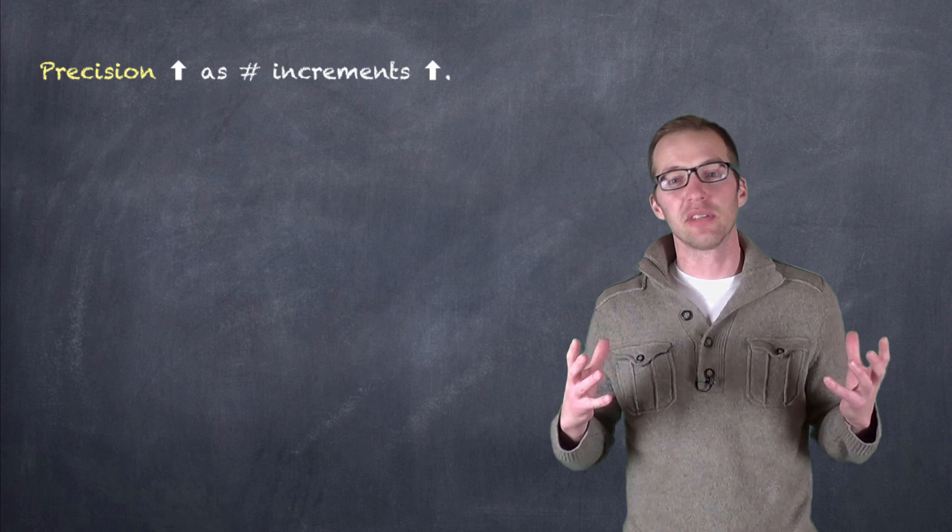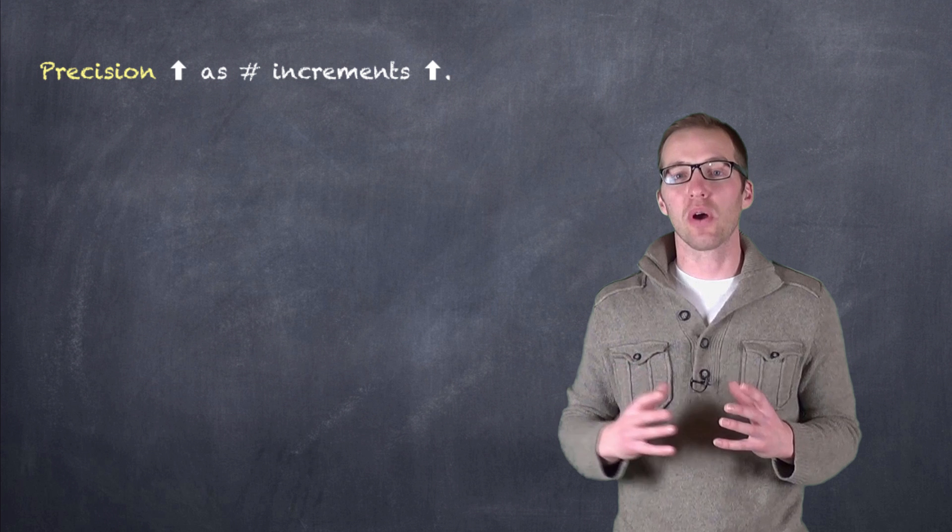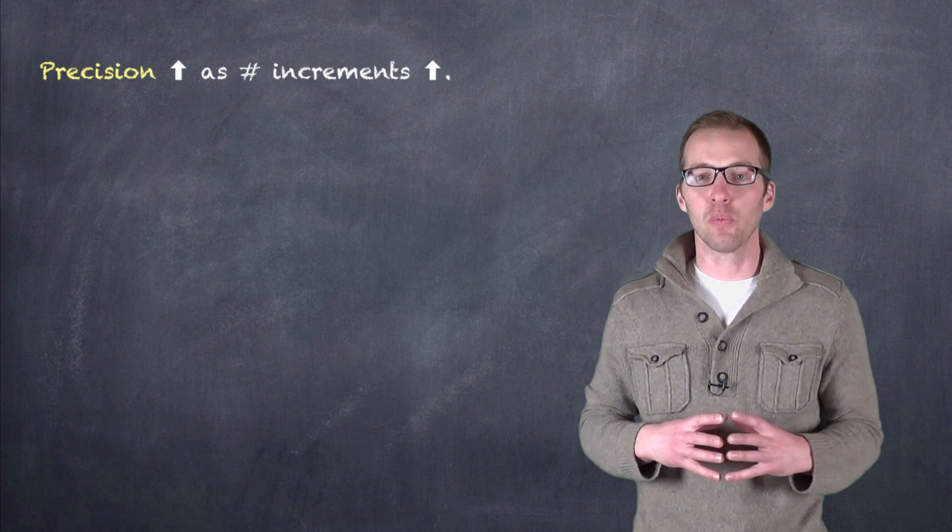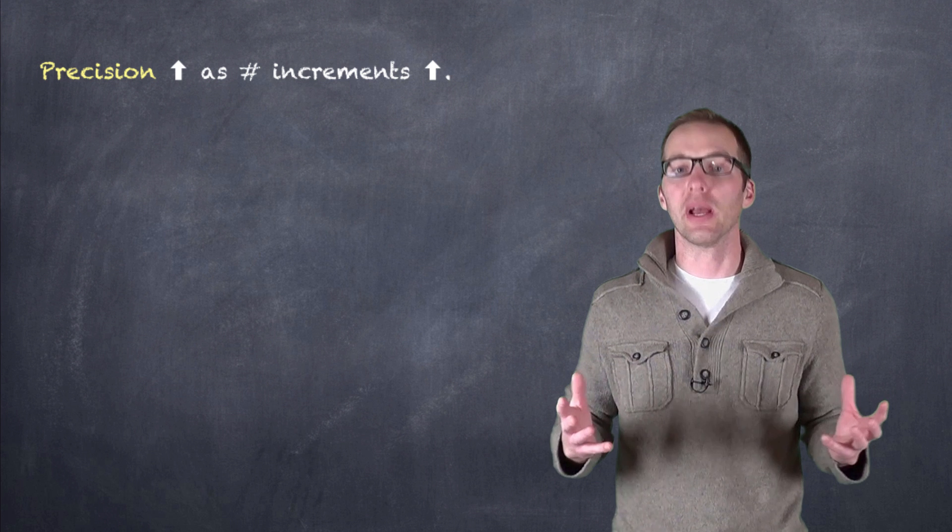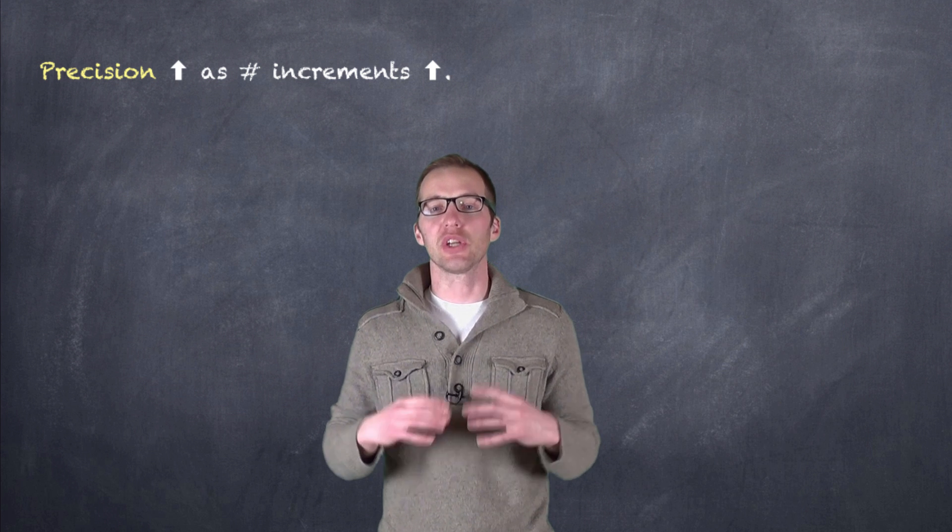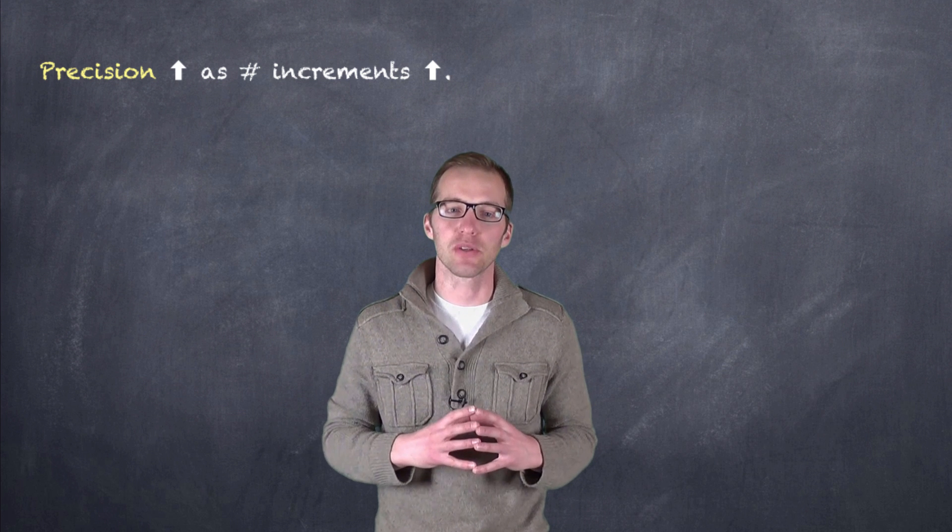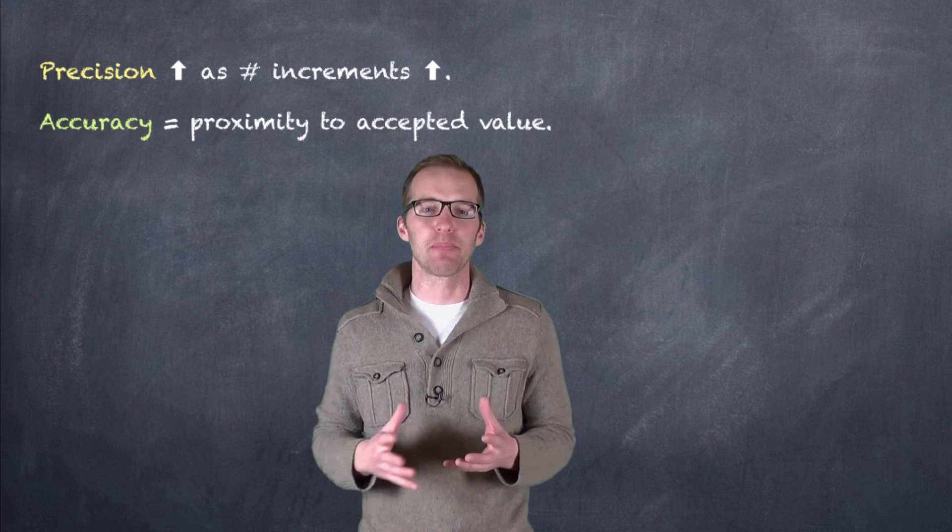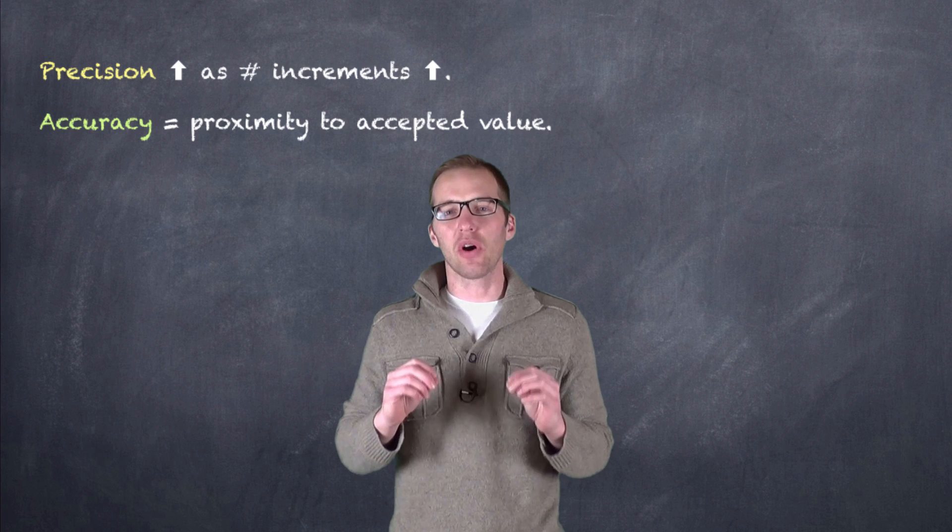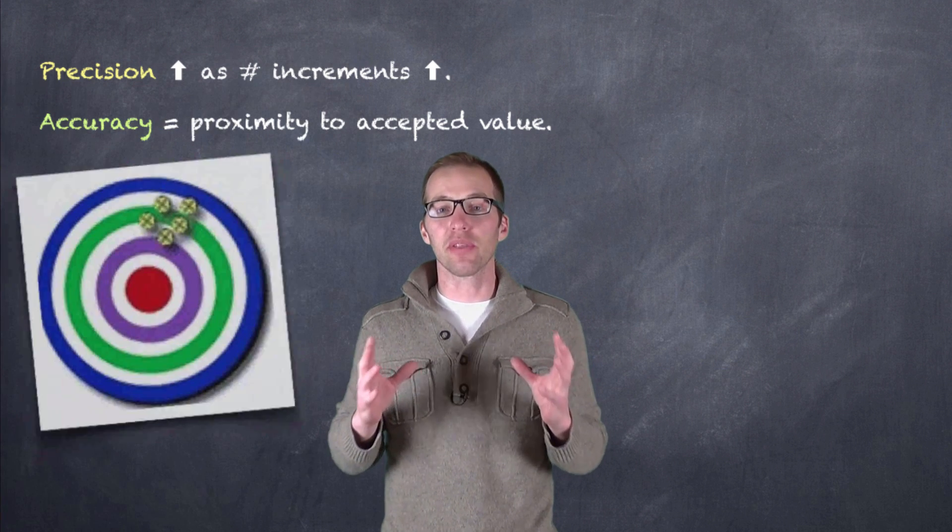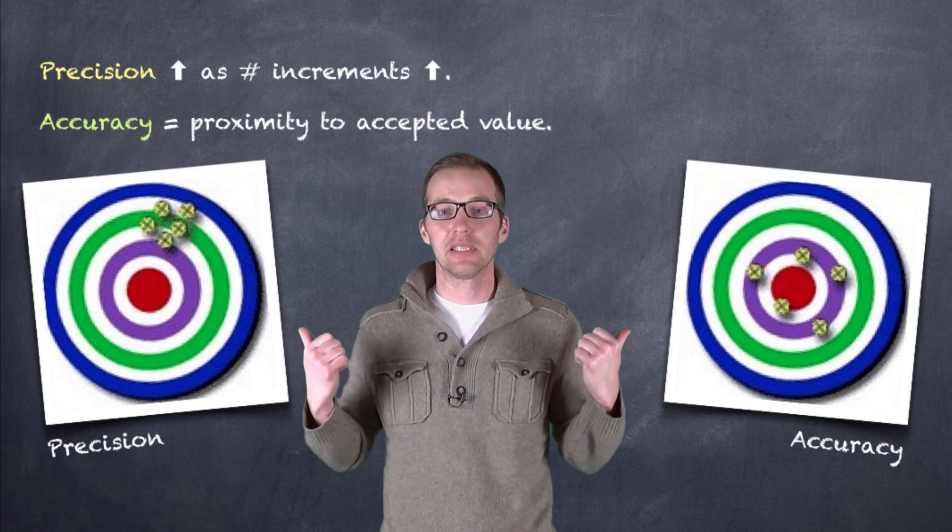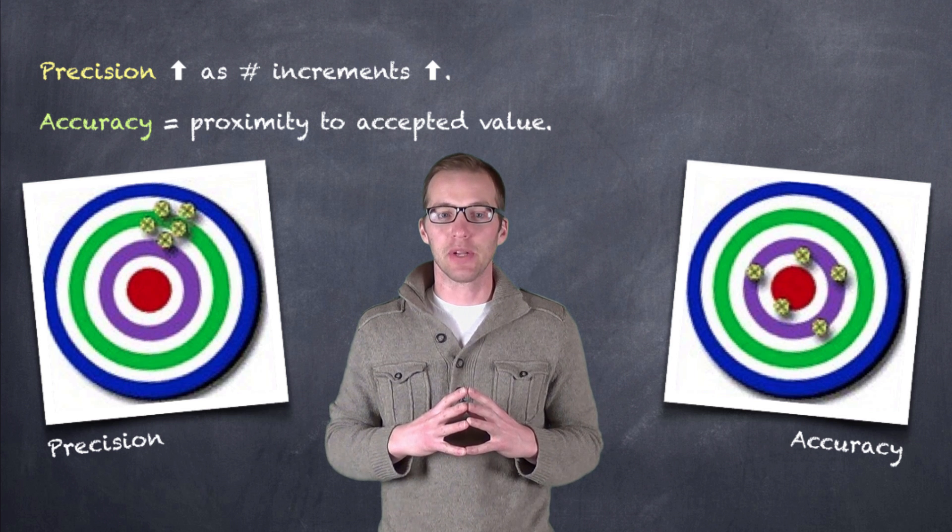When we deal with an electronic balance, an electronic balance that measured to the hundredth of a gram would be more precise than one that would measure to the gram. So when we talk about precision, it all has to do with the device that we're using to measure. Now with accuracy, it's how close we are to the accepted value. The two things are quite different when you go to think about it, and we can use a little bit of an analogy to help us out here.